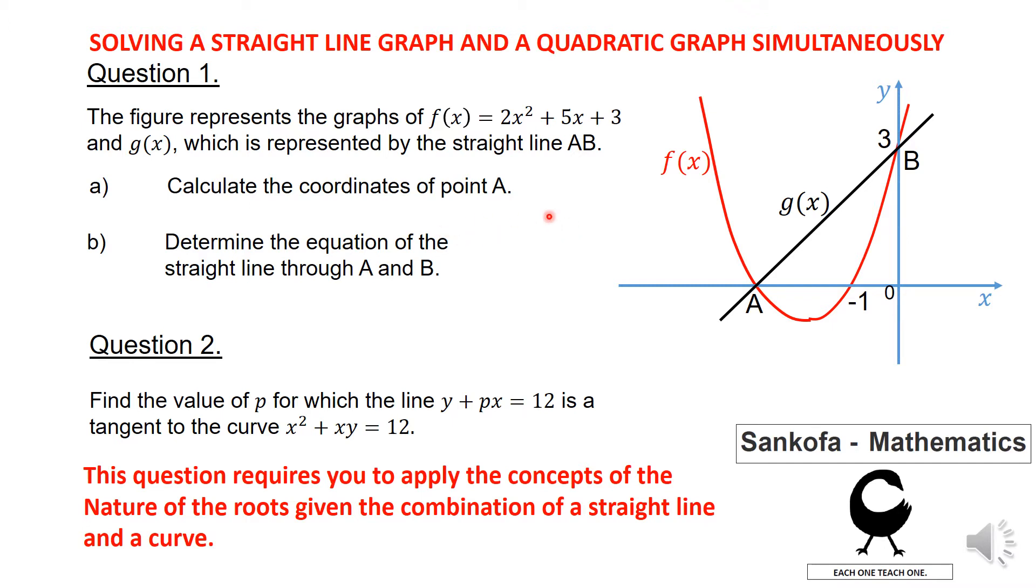They want us to calculate the coordinates of point A, and then after that they say you must determine the equation of the straight line through points A and B. And then question two, you're supposed to find the value of p for which the line y + px = 12, this line here, the straight line. This line is a tangent to the curve x² + xy = 12.